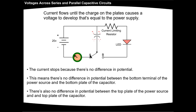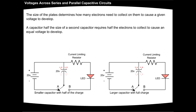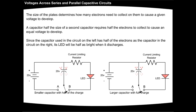There's also no difference in potential between the top plate of the power source and the top plate of the capacitor. The size of the plates determines how many electrons need to collect on them to cause a given voltage to develop. A capacitor half the size of a second capacitor requires half the electrons to collect to cause an equal voltage to develop. Since the capacitor used in the circuit on the left has half of the electrons as the capacitor in the circuit on the right, its LED will be half as bright when it discharges.